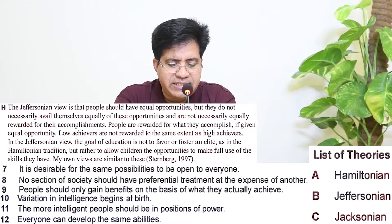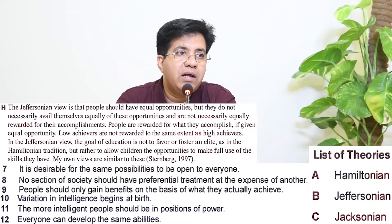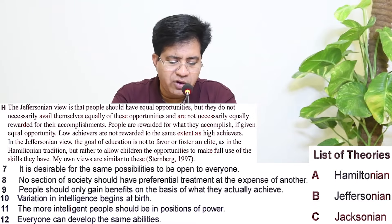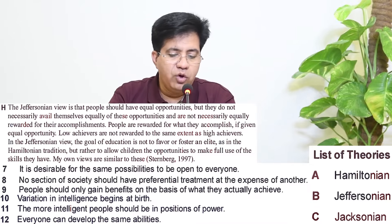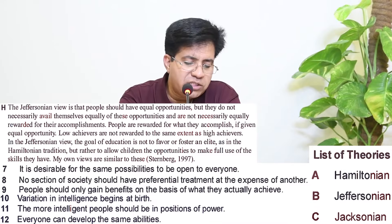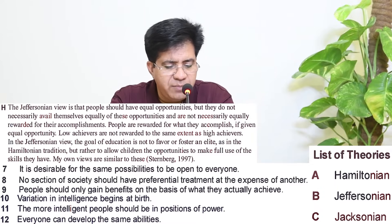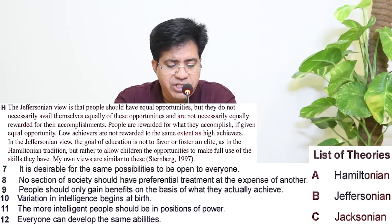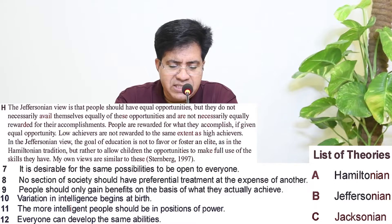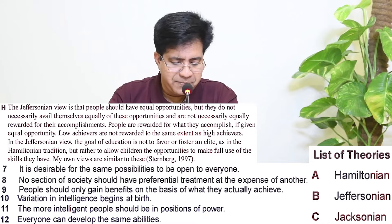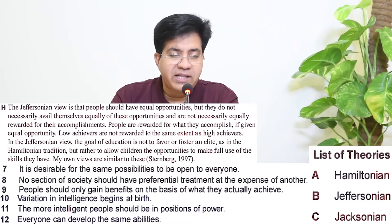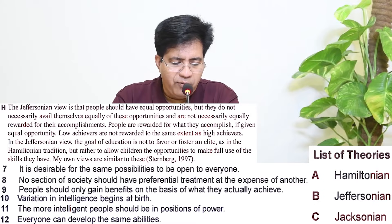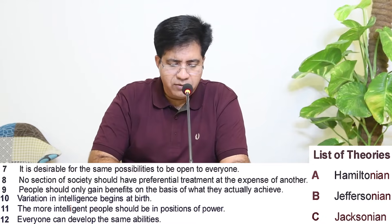Question 7: 'It is desirable for the same possibilities to be open to everyone.' The Jeffersonian view says 'people should have equal opportunities.' Answer is B. Cross out question 7. Question 9: 'People should only gain benefits on the basis of what they actually accomplish.' The passage says 'people are rewarded for what they accomplish.' Answer is B. Cross out question 9.